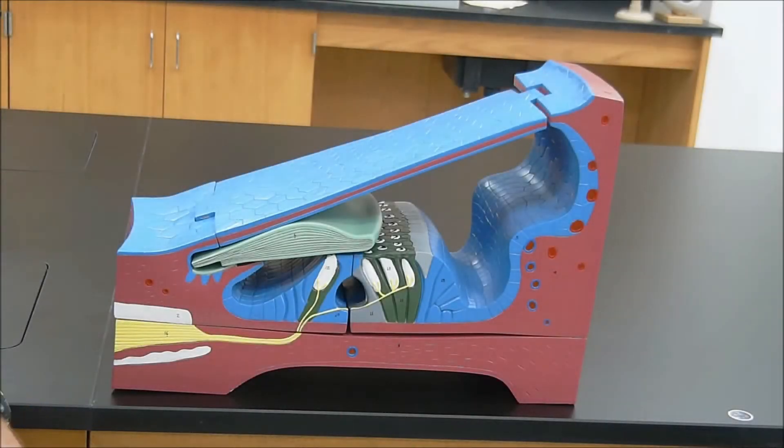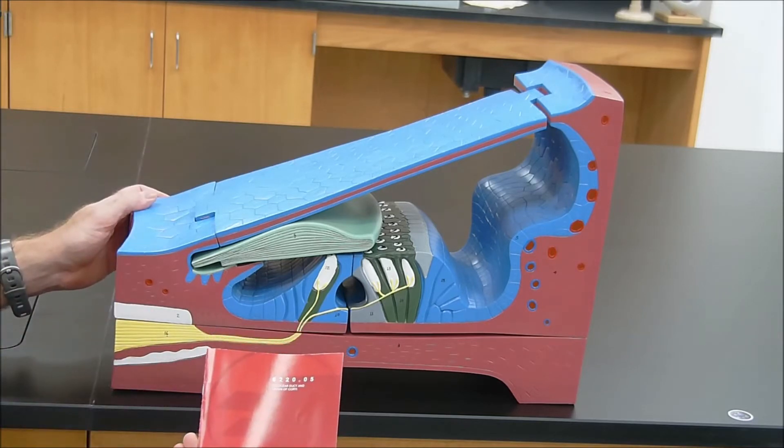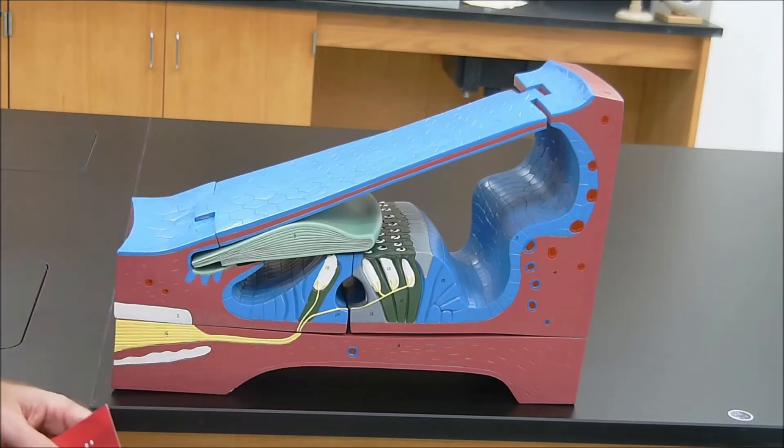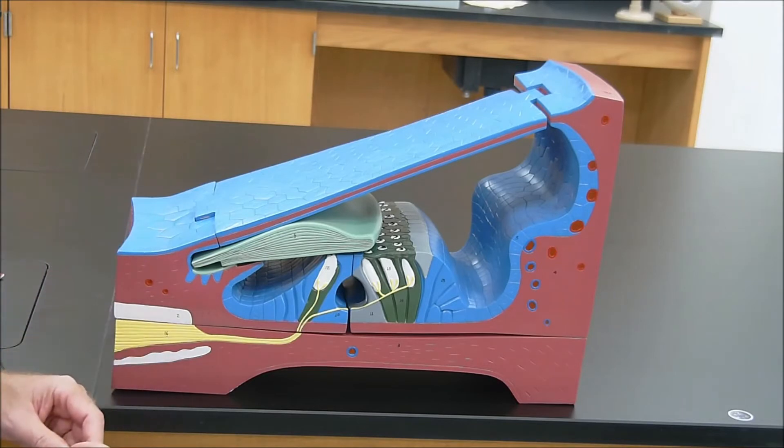Okay, our next model here is the Alté Scientific, and it's a model of the cochlear duct and the organ of Corti. Remember, the organ of Corti is the area inside the cochlea where we have transduction of sound waves into nerve impulses that can be understood by the brain.